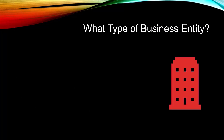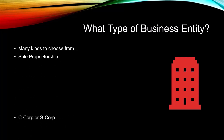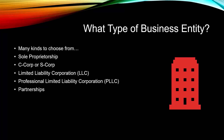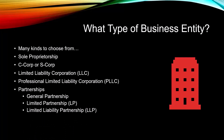The first thing you need to do is determine what type of business entity you're going to be. There are many kinds to choose from: sole proprietorship, C-Corp, S-Corp, limited liability corporation, professional limited liability corporation, and all sorts of partnerships — general partnership, limited partnership, limited liability partnership, and limited liability limited partnership. I'm going to talk about just a few of these that you'll probably want to start with.